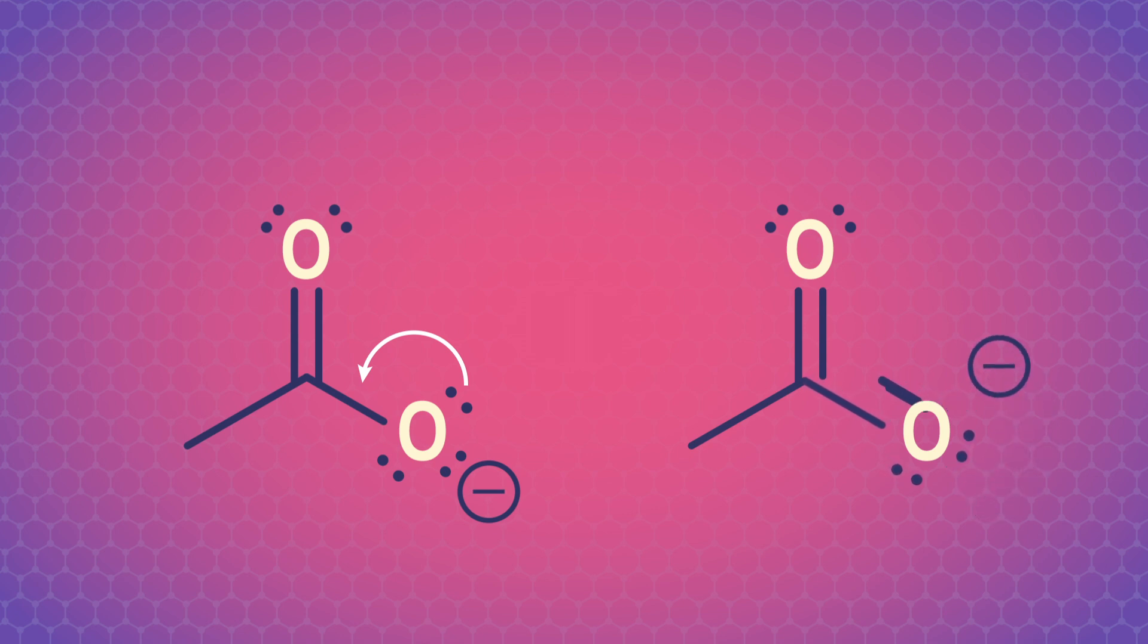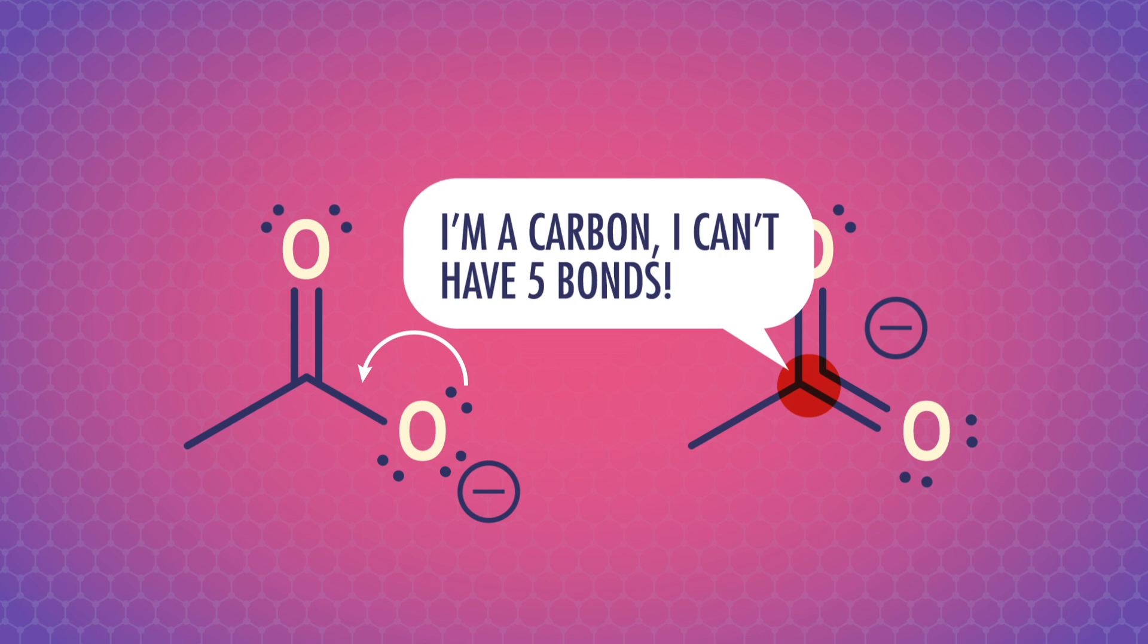When we move a lone pair off an atom, it has to form a neighboring pi bond. But we can't stop here. This would give a carbon with five bonds, which is not organically acceptable because it exceeds carbon's maximum valence electrons. We have to keep pushing electrons until we have a molecule that follows rules we've already learned about the maximum number of electrons and bonds.